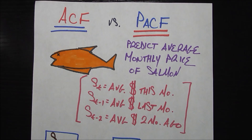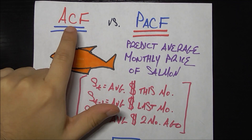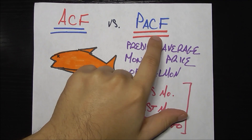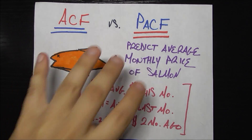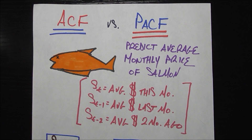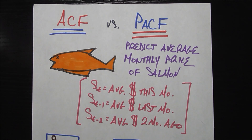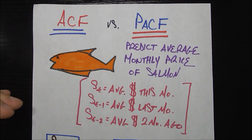In this video, we're going to be talking about the autocorrelation function, ACF, and the partial autocorrelation function, PACF, and most importantly, the big differences between them. When I first started learning time series in economics, this was a really big challenge for me — understanding the intuition behind ACF versus PACF, understanding real-world examples where they both arise, and understanding how to derive them both mathematically. I'm hoping to make some of those challenges a little bit easier for you.